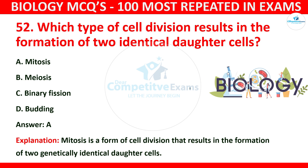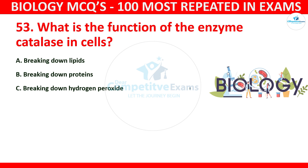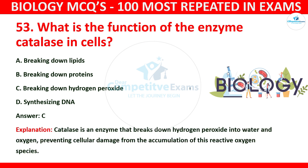Question number 53: What is the function of the enzyme catalase in the cells? The options are breaking down lipids, breaking down proteins, breaking down hydrogen peroxide, or synthesizing DNA. The correct answer is C: breaking down hydrogen peroxide. Catalase is an enzyme that breaks down hydrogen peroxide into water and oxygen, preventing cellular damage from the accumulation of this reactive oxygen species.